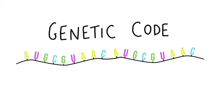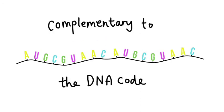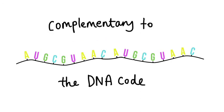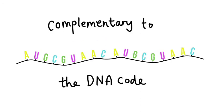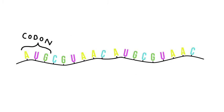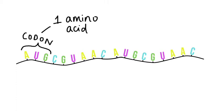mRNA is easily broken down, so it is only there when a protein is required to be made. The sequence of bases on mRNA is called the genetic code. This code is complementary to the DNA code since it is derived from it. The mRNA and DNA codes are not identical. Every three bases in the sequence is called a codon and it codes for one amino acid.